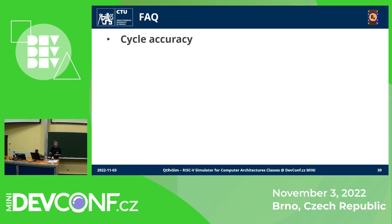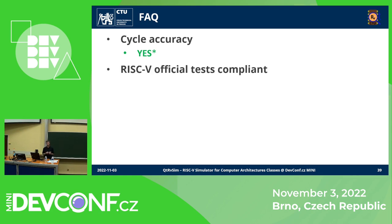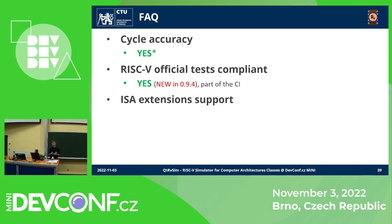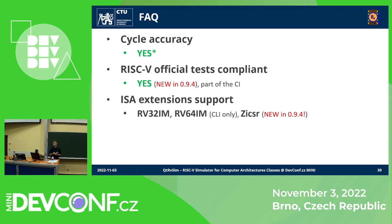Now some frequently asked questions. Is the simulator cycle accurate? The answer is yes, with a small exception: in the visualization we assume that memory will always finish in one cycle, and we only take note of memory taking longer for the statistics. Is the simulator compliant with the official RISC-V tests? I can finally say yes — we added that in the latest release and it's now part of the CI. What instruction set extensions do we support? The graphical part supports the basic 32-bit ISA, the multiplication extension, and recently we added control and status register support. In the command line interface you can also simulate the 64-bit ISA, though we haven't yet figured out how to fit it into the visualization.